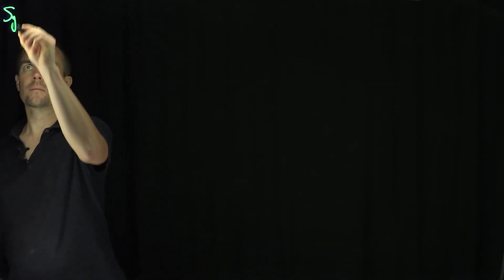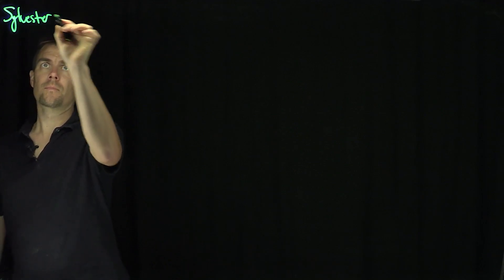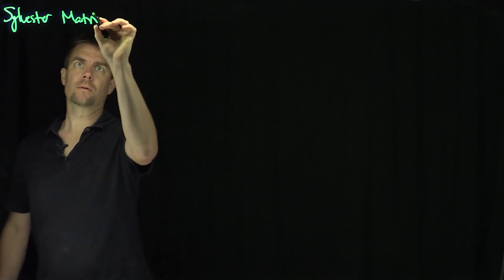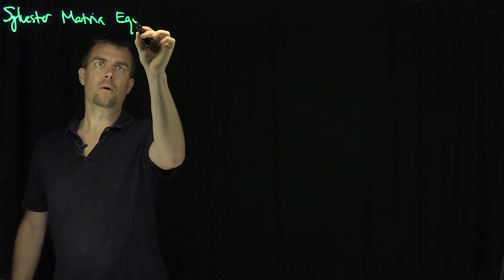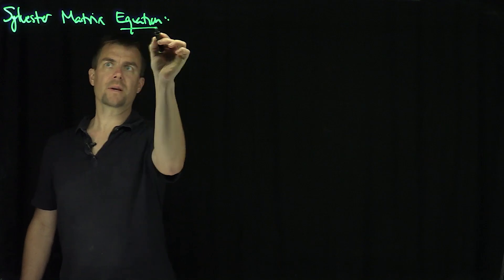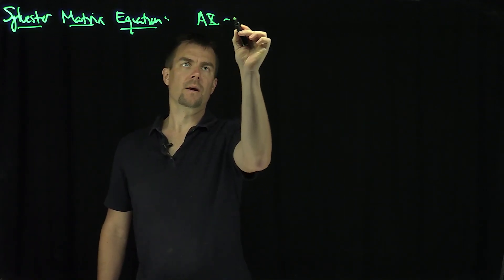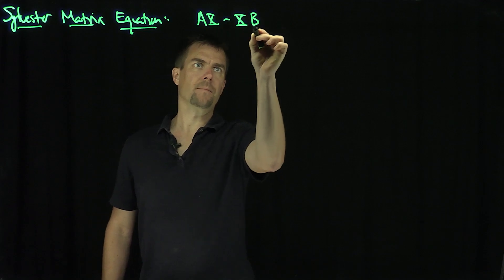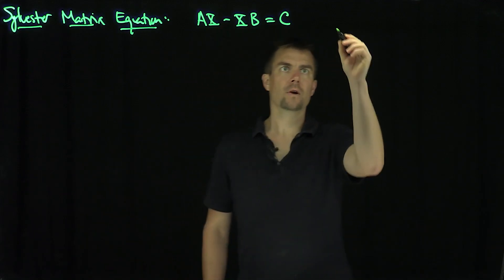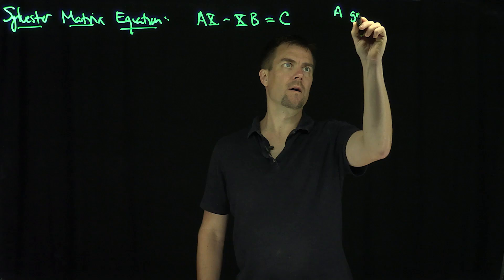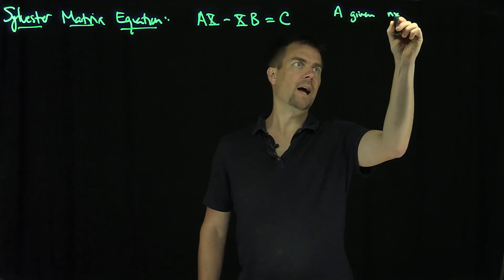The Sylvester matrix equation is the following. You have AX minus XB equals C, where A is a given n by n matrix,